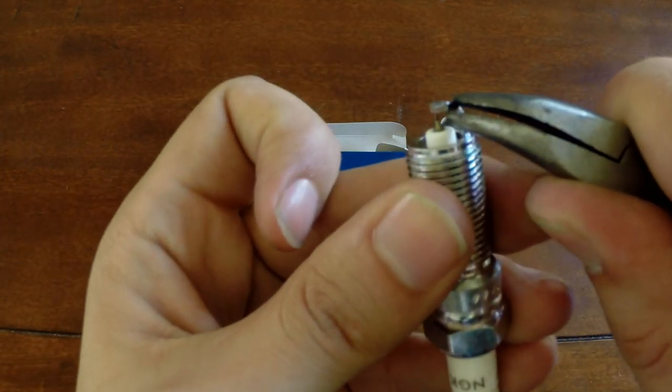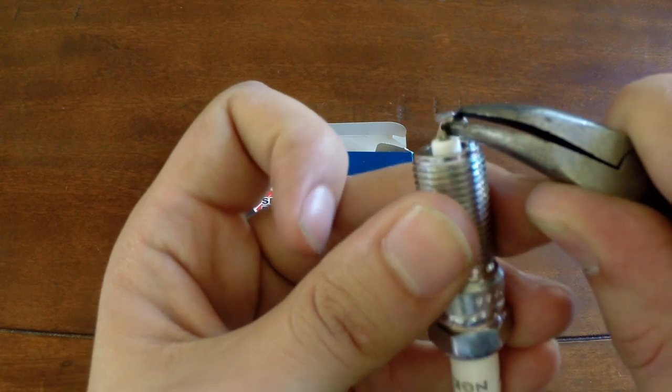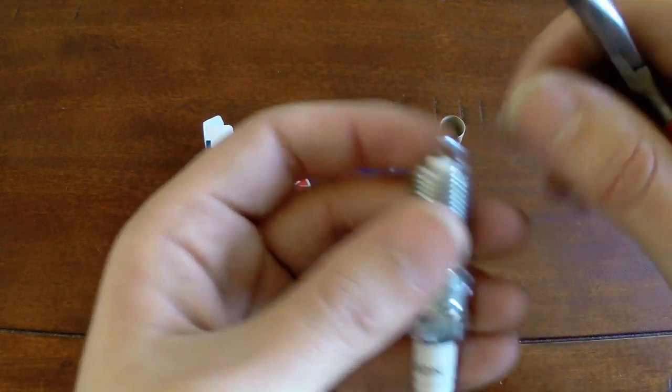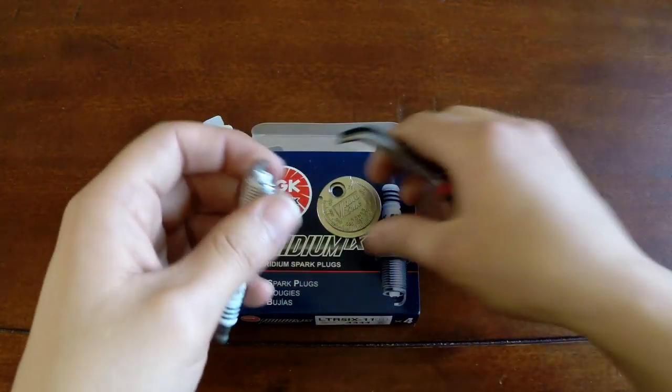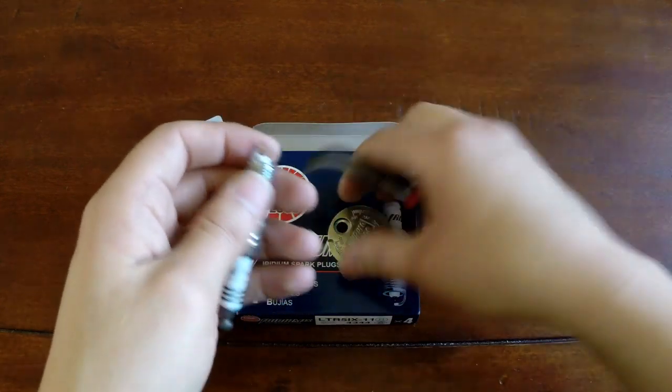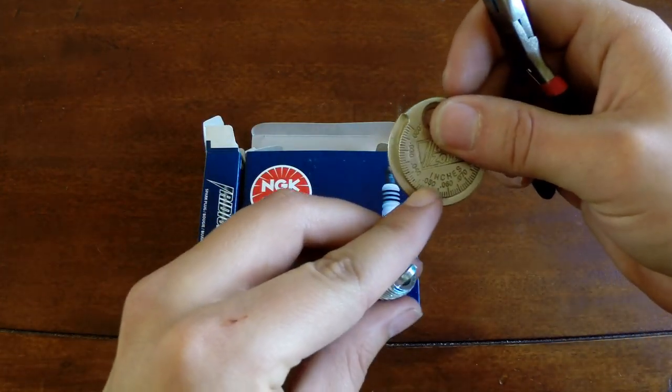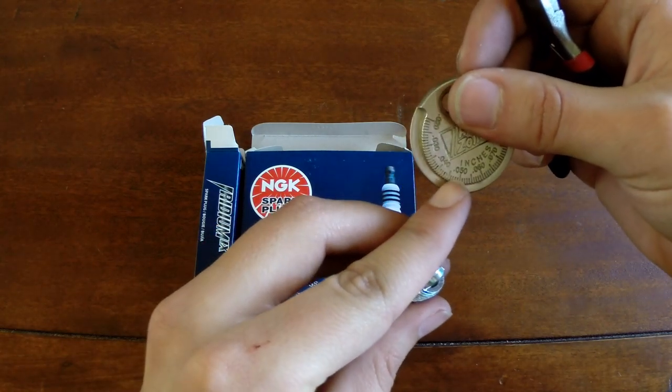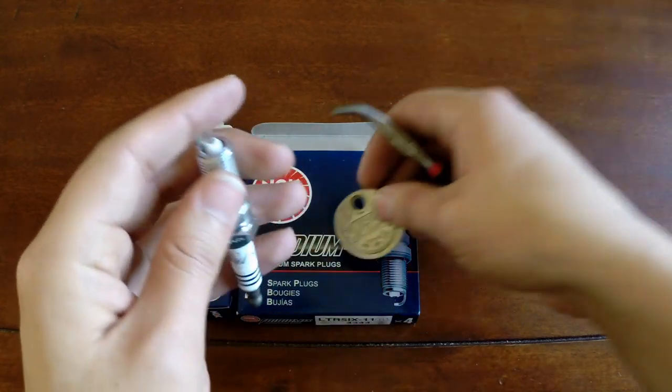So you see that? It just barely fits in there. You're going to pull up, since if it was smaller then you would pull up, and you would keep pulling up and then you would recheck, pull up, recheck until you got to your desired gap. For us again, it was .044 or .045.